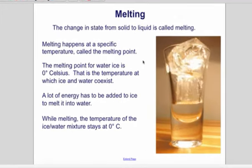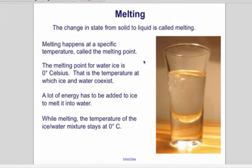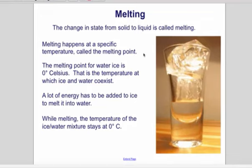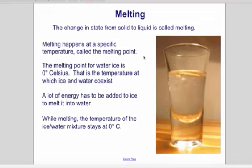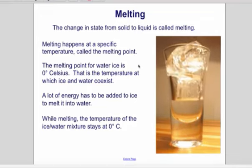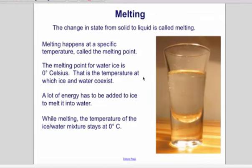The change in state from solid to liquid is called melting. Melting happens at a specific temperature called the melting point. The melting point for water-ice is zero degrees Celsius. That is the temperature at which ice and water coexist.